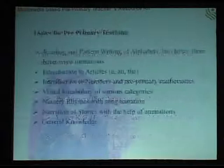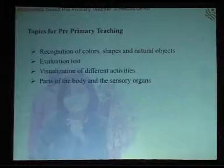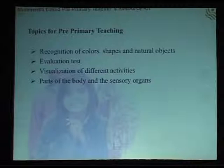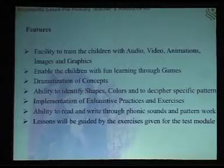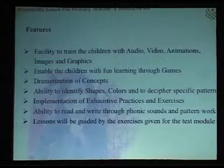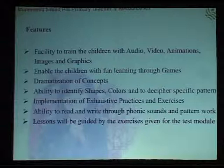This is basically for the age group 4 to 6. Topics in this content include reading and pattern writing of alphabets, introduction to articles, visual vocabulary, nursery rhymes, stories, and general knowledge concepts. There is a recognition part covering colors, pictures, and shapes. Evaluation tests are available, as well as visualization of different activities. A teacher can also add content to this system through an admin login.